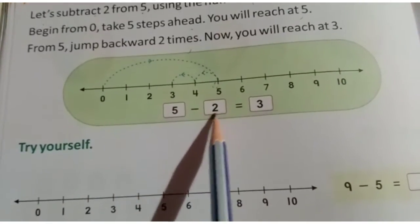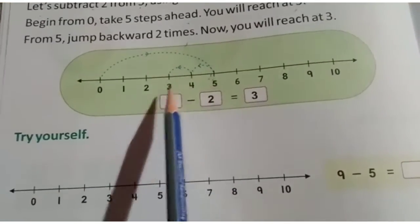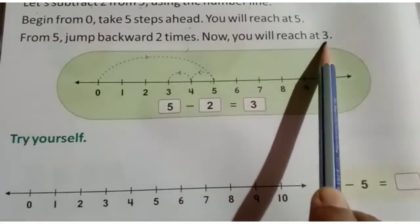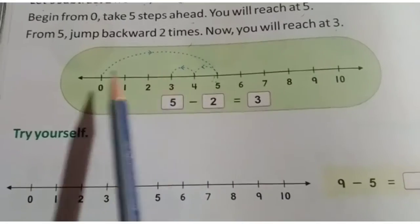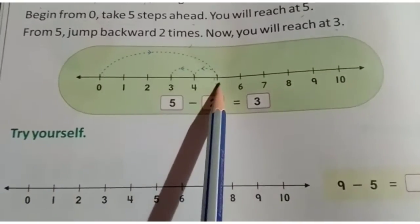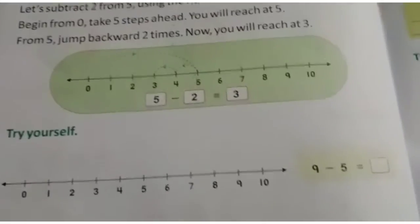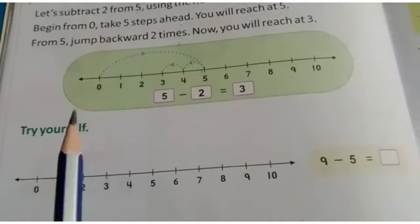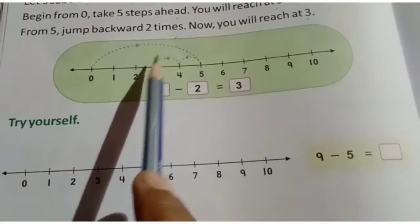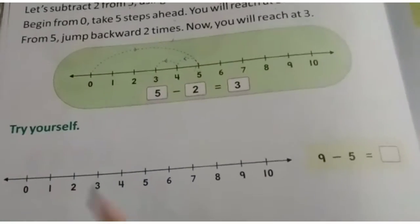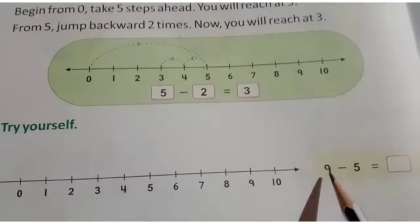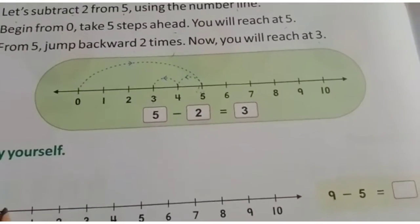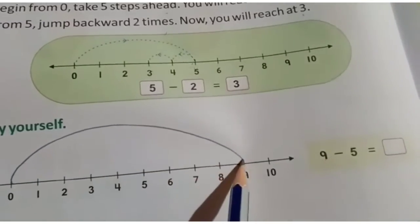From five, jump back two times. We had to return two steps, so we go two steps back. Now you will reach at three. So first we jumped to number five on the number line, then from five we came two steps back, and we got three. That is our answer. Now next: look — the first number given here is nine, so we jump from zero to nine on the number line.